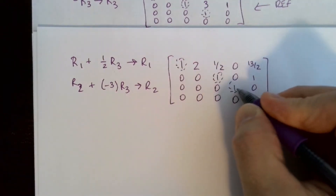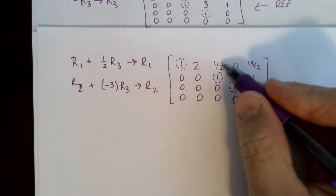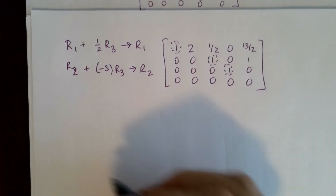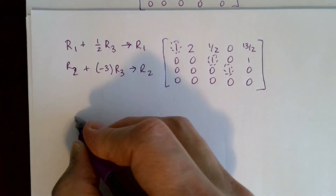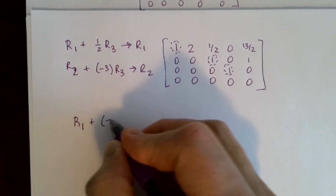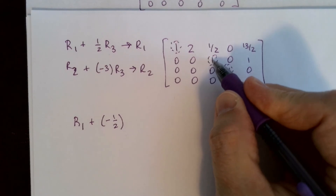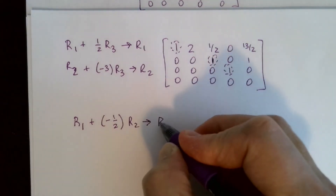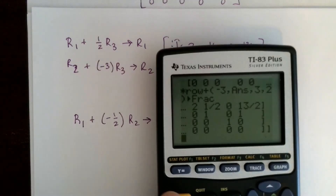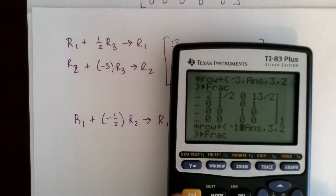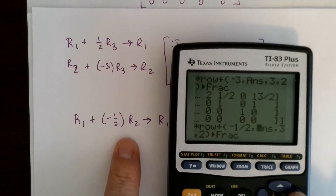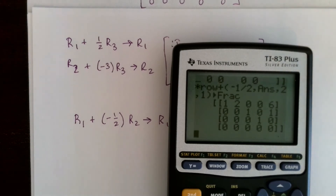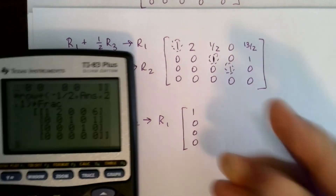Using 2nd entry, change the multiplier to negative 3, keep row 3 as the source, but add to row 2 — change the target to 2. Hit enter and watch the 3 become a zero above the leading 1. The fourth column now has zeros both above and below the leading 1. The last column shows 13 halves, 1, 0, 0. Now the final step: there's a one half above the leading 1 in row 2, so add negative one half times row 2 to row 1. Multiplier is negative one half, row 2 into row 1.